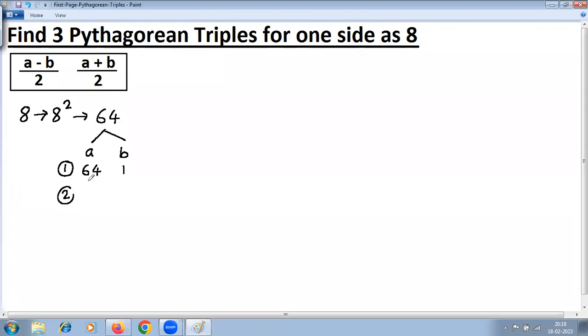Second, it's very clear here: 32 into 2. 32 into 2 is 64. And third is 16 into 4. 16 multiplied by 4 is 64. So you have got three factors for the same number 64.